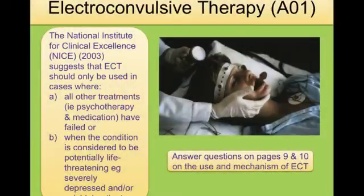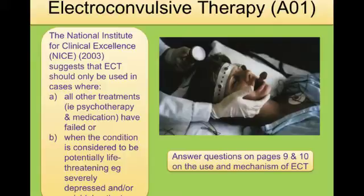The second biological therapy is electroconvulsive therapy — ECT — and it's the most controversial type of therapy. The National Institute for Clinical Excellence (NICE) recommends that ECT for depression should only be used if all other treatments and medications have failed, or if the condition is life-threatening — for example, if someone is genuinely going to kill themselves. There's lots of great material on YouTube about ECT showing people who are for and against it, and demonstrating the mechanisms.